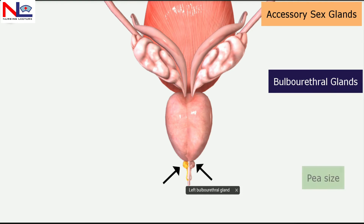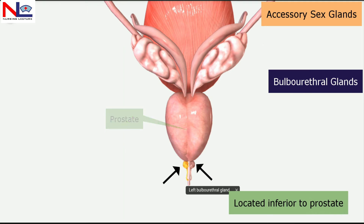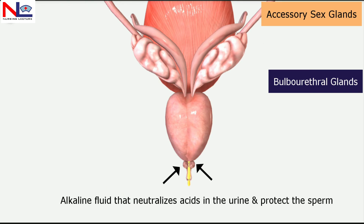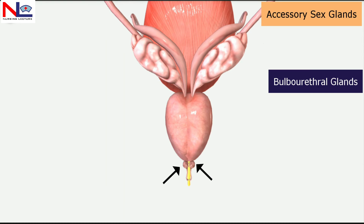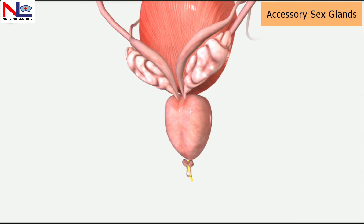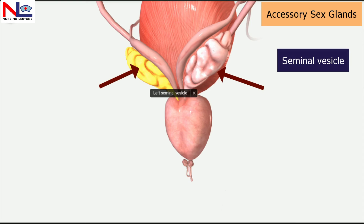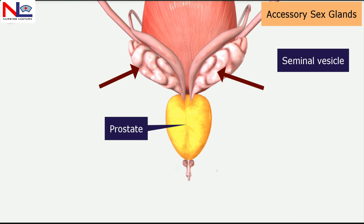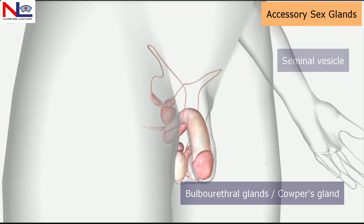The next are the bulbourethral glands, also called Cowper's glands. They are about the size of a pea, located inferior to the prostate on either side of the membranous urethra. These glands secrete an alkaline fluid into the urethra that neutralizes acid from urine and protects the sperm. They also release mucus at the end of the penis and within the urethra, decreasing the number of sperm damaged during ejaculation.